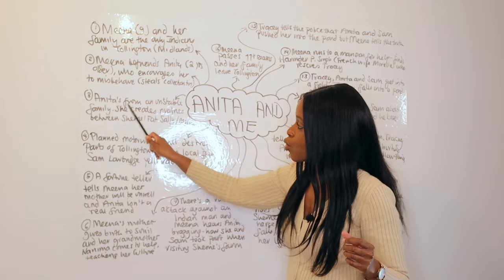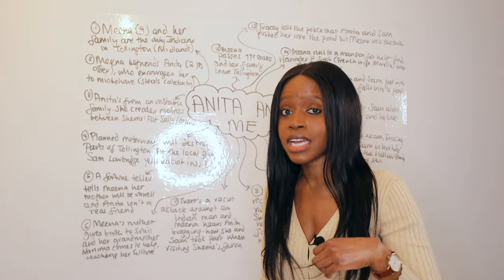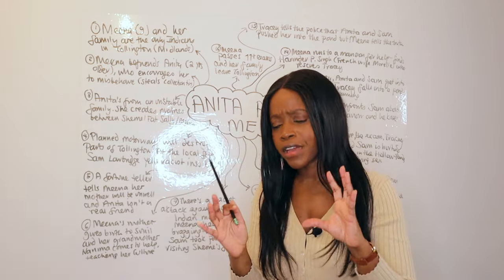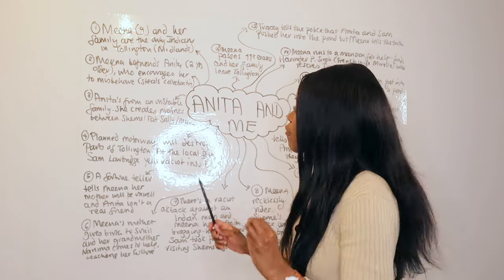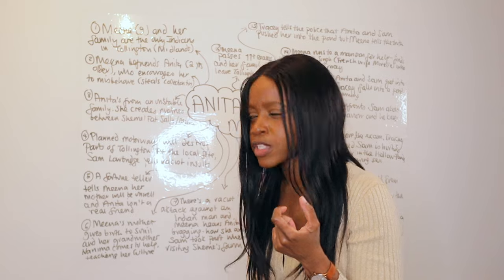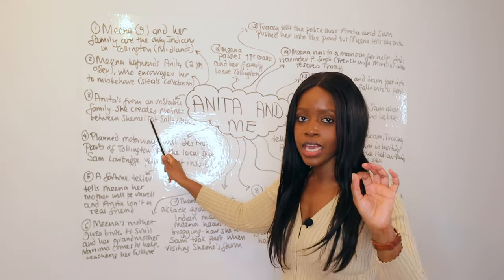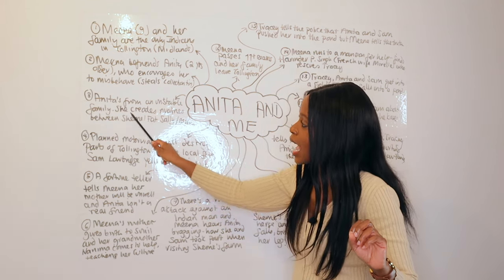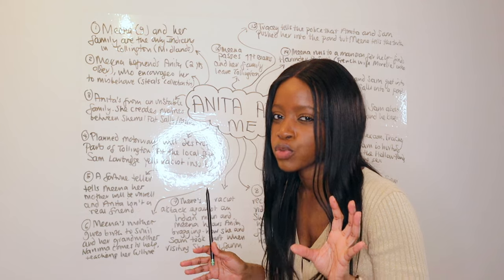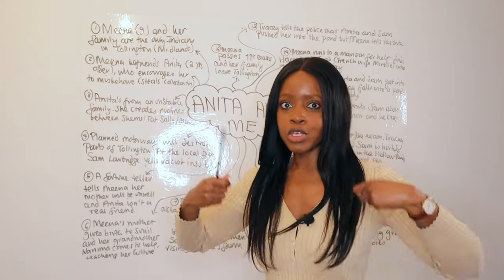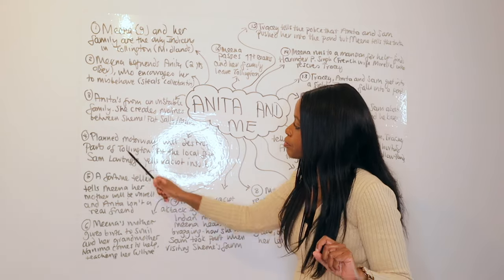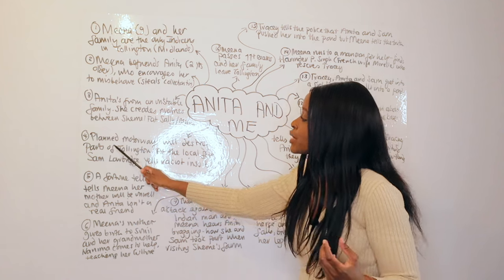We also learn that Anita, unlike Mina, comes from a very unstable family — in fact her mother ends up leaving and abandoning them. So in contrast to Mina, who comes from a very stable and traditional Indian family, Anita's English family is quite unstable. We also find that Anita has a malevolent, manipulative side. Mina is one of three close friends alongside Sherry and Fat Sally, and Anita tends to play them off against each other, creating rivalries so they always have to prove themselves to her.